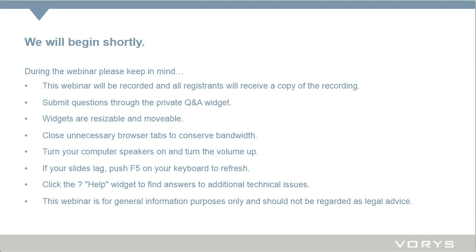If you have any questions during the webinar, you can submit them through the private Q&A widget without disturbance to the program. If you're having technical issues, you can find answers to common technical troubles in the help widget at the bottom of your screen, or submit a question via the Q&A widget. An on-demand version of the webinar will be available approximately one hour after the program has concluded, accessed using the same audience link sent to you earlier. If you'd like Ohio CLE credit, please fill out the survey and continuing education information form on your screen. There's also a certificate of attendance you can download following the program.